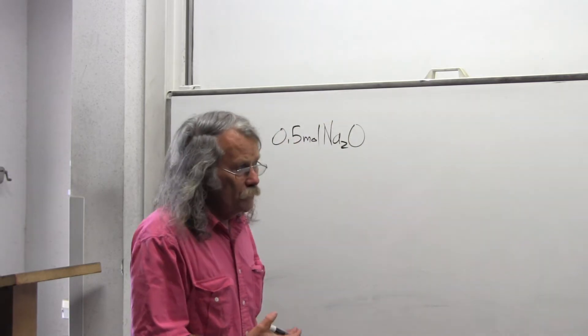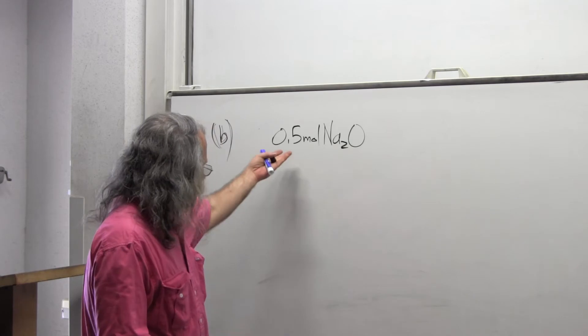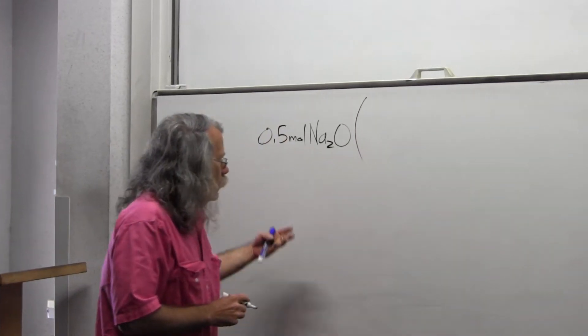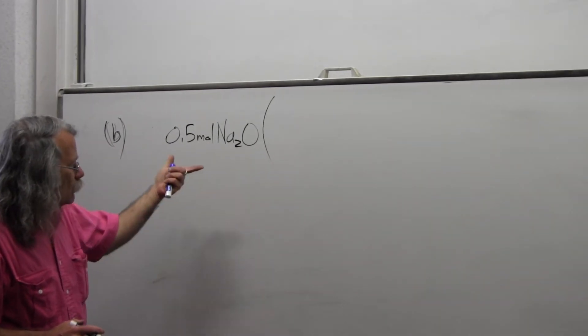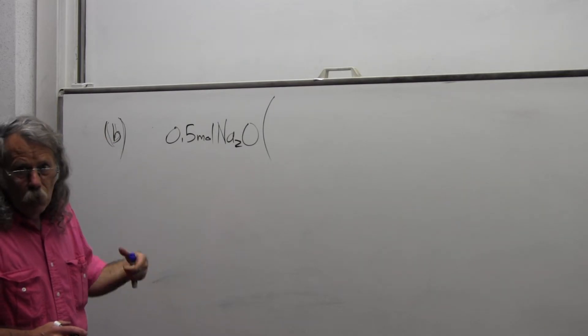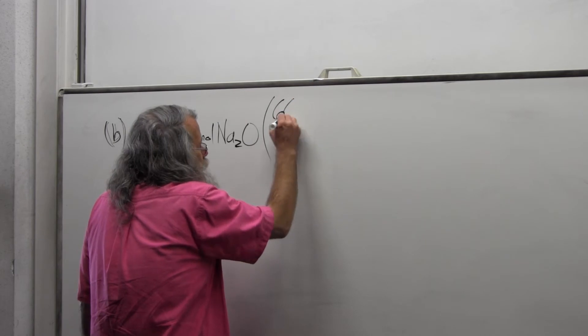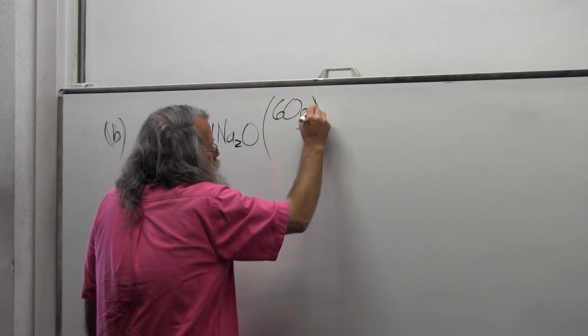So we can then answer part C. I need to go from half a mole of sodium oxide. On the left-hand side, I'm going to need to go to grams, so I'm going to need to use the molar mass of the sodium oxide, and there is 60 grams of sodium oxide.